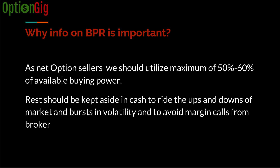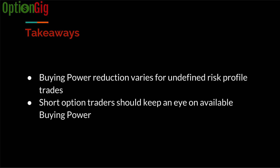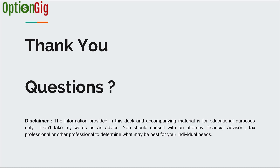Key takeaways: buying power reduction varies for undefined risk profile trades — naked options and short stock selling are both undefined risk, so in both cases the available buying power will vary throughout the option expiration cycle. As short option traders, we should keep an eye on available buying power and always ensure we have enough to ride downturns in the market.